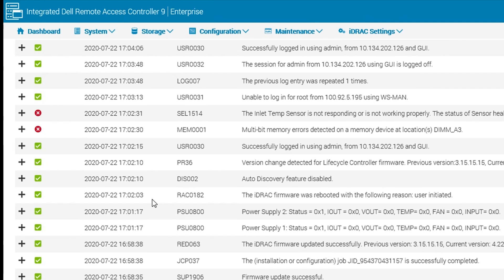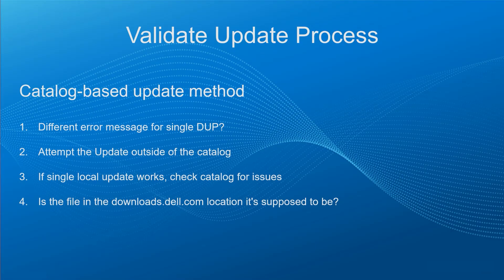Now let's look at some different scenarios for update issues. First we'll talk about the catalog-based update method. Let's say someone wanted to update the entire server but the update job fails. We could attempt updating a single package instead of the entire system — if so, do we get a different error message for the single package? We could also utilize other methods of update outside the catalog. If we try the single package locally on the iDRAC and it does work, we should then check the catalog for issues — one thing to check would be whether the file is in the downloads.dell.com location where it's supposed to be.